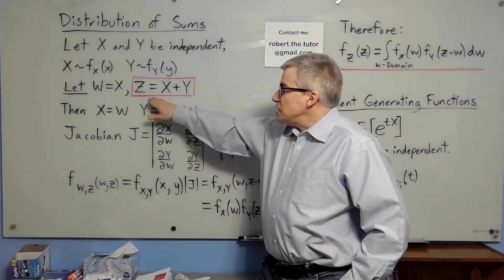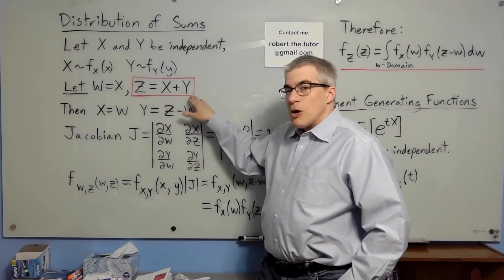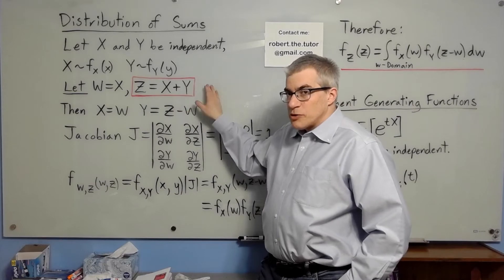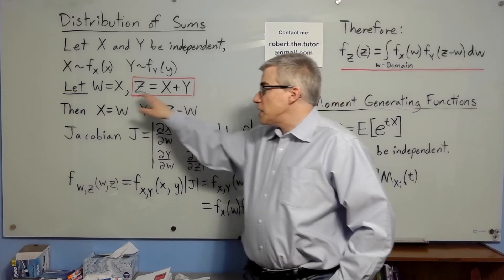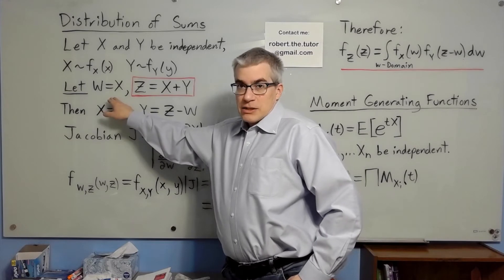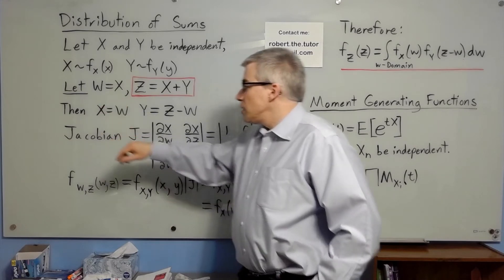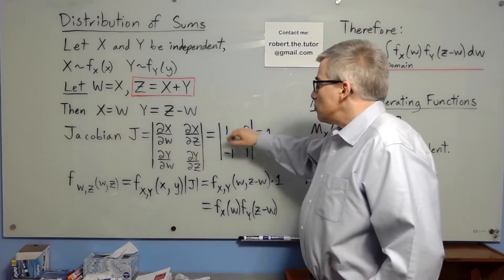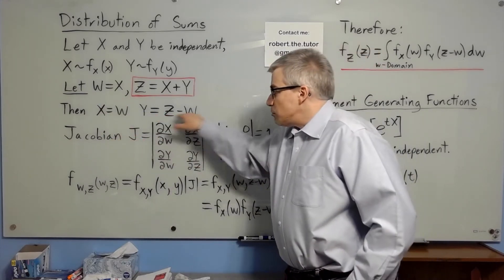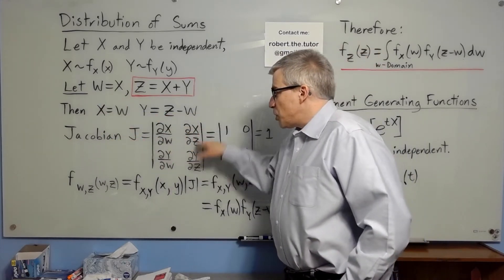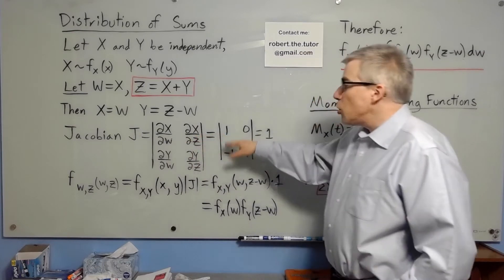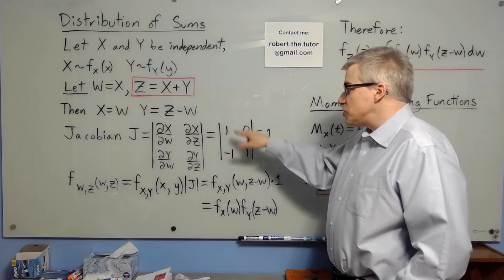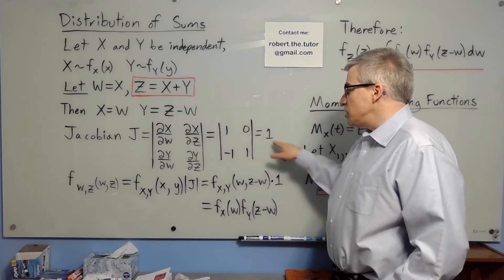Let z be x plus y — that's what we want to find out. To transform two variables, you need two variables, so let w equal x. We solve for x and y, we take the partial derivatives, and we find the Jacobian of this transformation is 1.